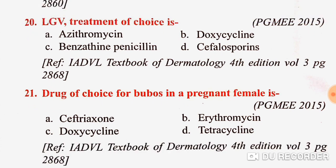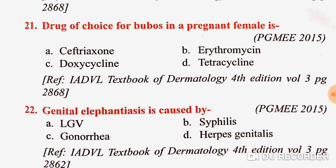There is a confusion between azithromycin and doxycycline. According to US guidelines, azithromycin is the drug of choice, but in this book the option given was doxycycline. You can clarify this answer in the comment box.